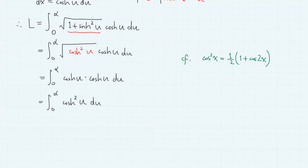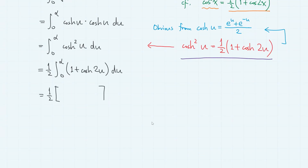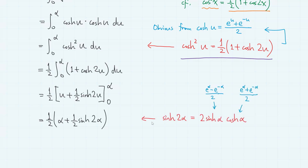When we integrate cosh²(u), we apply the half-argument formula analogous to the half-angle formula for cosine, which gives one-half times (1 + cosh(2u)). So we have one-half times the integral of (1 + cosh(2u)) du. Integrating gives one-half times u plus one-half sinh(2u), evaluated from 0 to α, which gives one-half times α plus one-half sinh(2α). Applying the double-argument formula for sinh, we get one-half times (α + sinh(α)·cosh(α)).